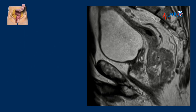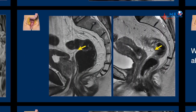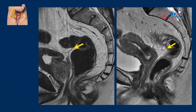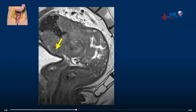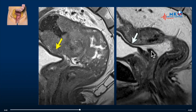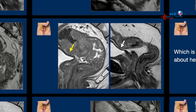Now let's see if we can find this anterior peritoneal reflection. It's situated about here — it can be very difficult to find. In another patient it's far more easy to see over here. In this case there is clear invasion of the peritoneal lining, while in this other case the rectal wall is lying against the peritoneal lining but there is no invasion of the tumor beyond the rectal wall.